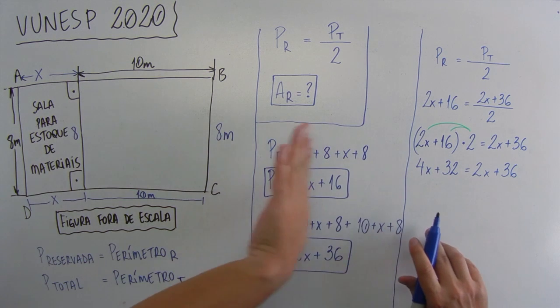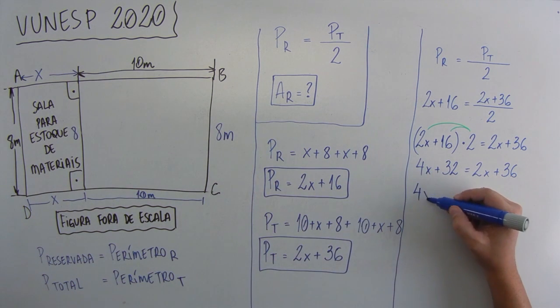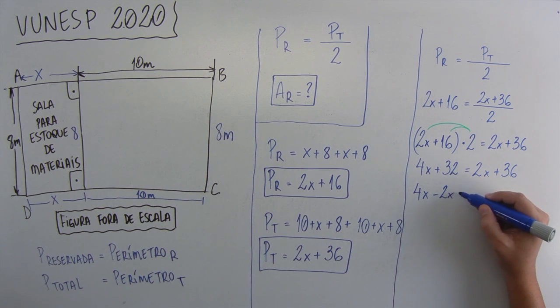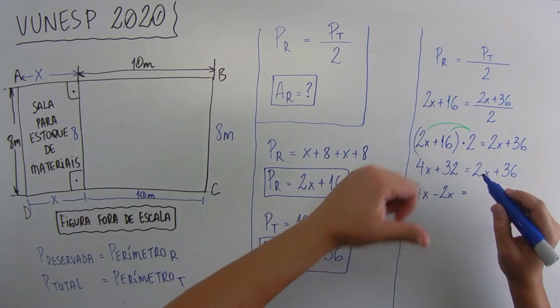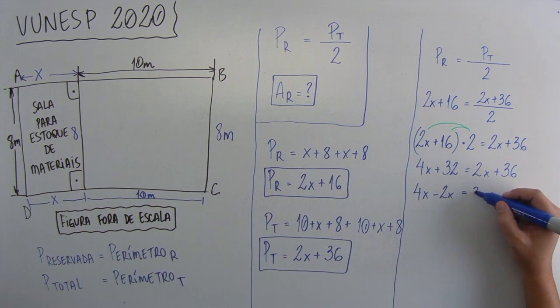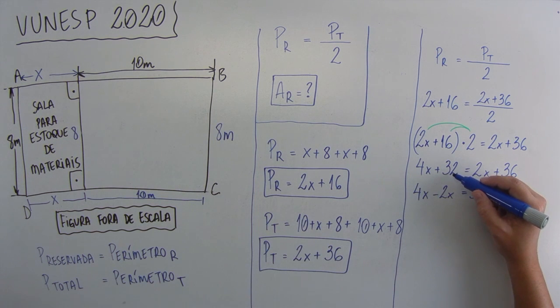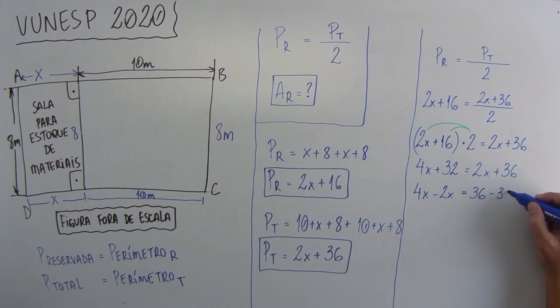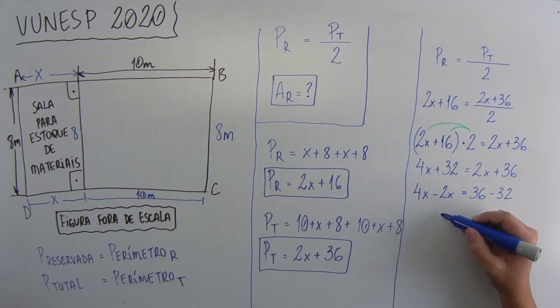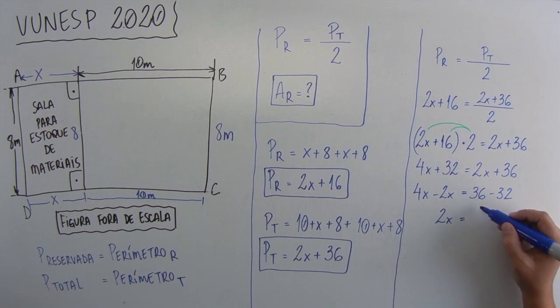Agora, tudo que tem letra de um lado, tudo que não tem do outro, então vai ficar 4X menos 2X, que é esse cara aqui que está positivo, vai passar para lá negativo, 36, que já estava lá, e esse 32 que está positivo passa menos 32 negativo. Pronto. 4X menos 2X vai dar 2X. 36 menos 32 vai dar 4. Olha que legal aqui.